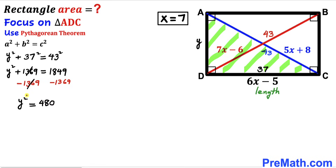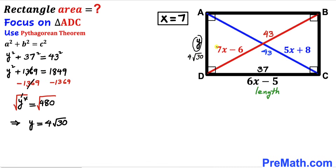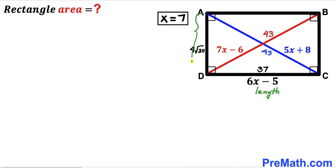Taking the square root on both sides to undo the square, our Y value equals the square root of 480, which simplifies to 4 times the square root of 30 units. So the width AD of this rectangle turns out to be 4 times the square root of 30.